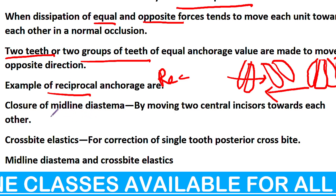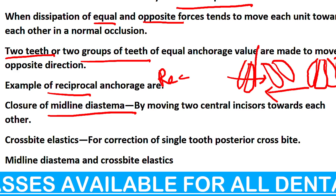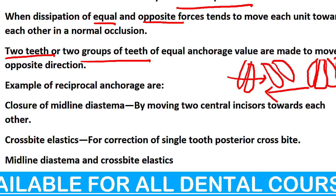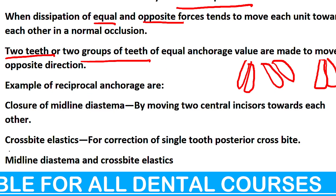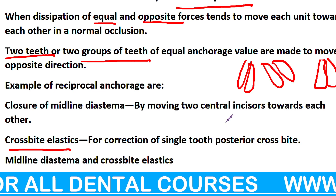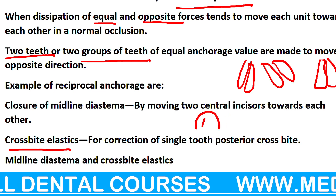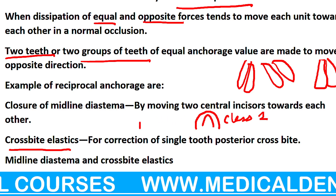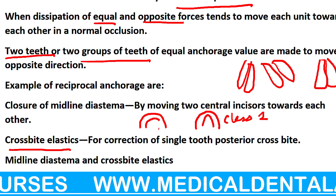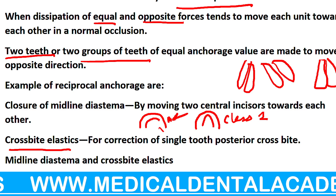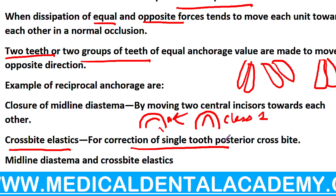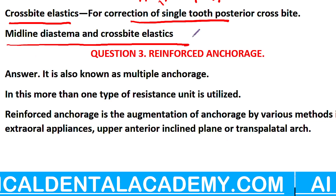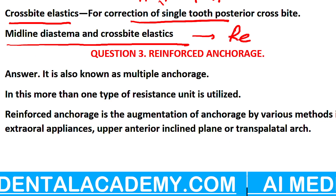Examples of Reciprocal anchorage: Midline diastema को close करना है — midline के आसपास जो spacing होता है — वो बोलते हैं midline diastema. फिर आता है Cross bite elastics — posterior में कोई एक दांत बाहर है — maxillary arch है, mandibular arch है — normally class one bite होता है, लेकिन कभी-कभार नीचे वाला दांत बाहर होता है — उसको अंदर ले जाने के लिए reciprocal anchorage use कर सकते हैं। तो midline diastema और cross bite elastics — यह main उसका purpose है।